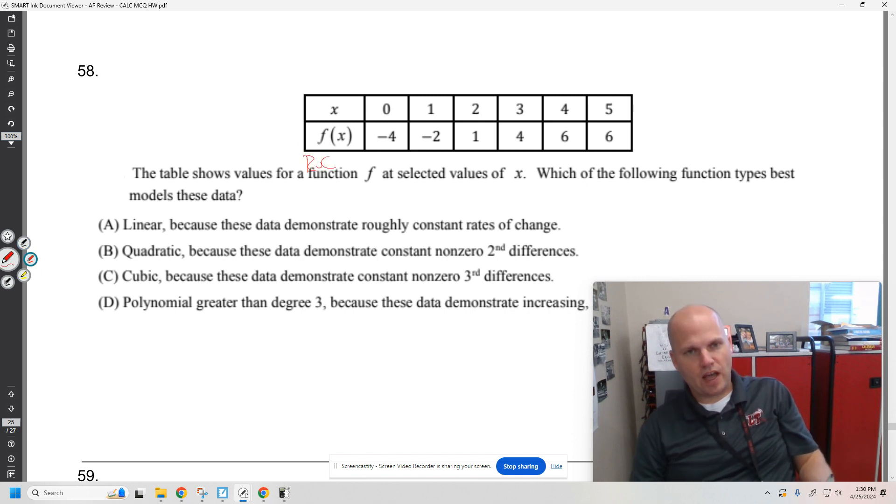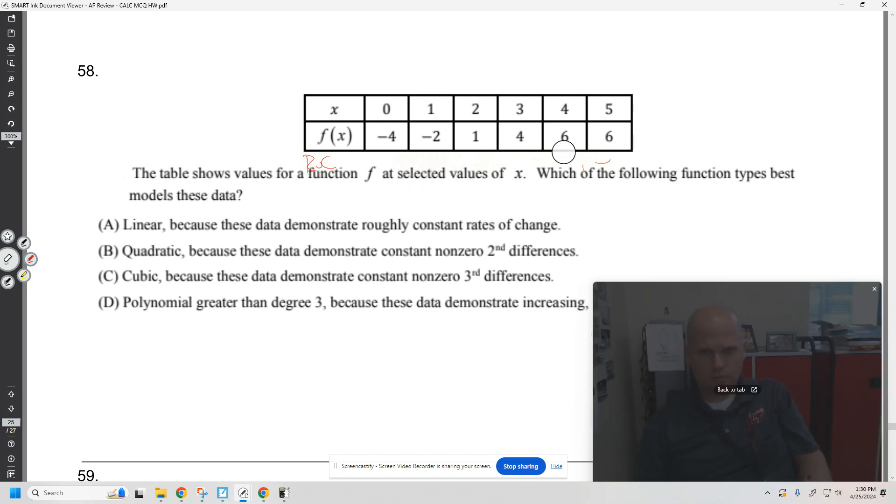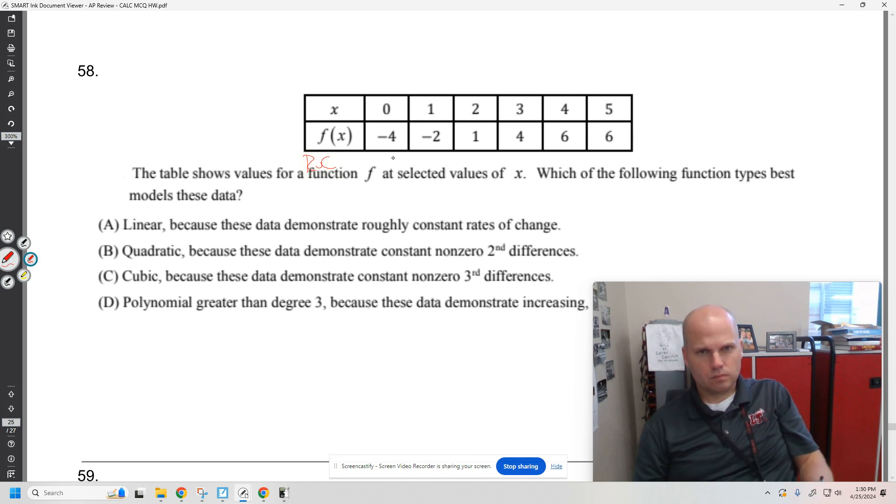So look at the rates of change of f: plus 2, plus 3, plus 3, plus 2, plus 0. The rates of change of the rates of change, and the rates of change are plus 1, plus 0, minus 1, minus 2. The rates of change of the rates of change constant. If this is constant it's linear. If this is constant it's quadratic. If the rates of change were linear, then the rates of change of the rates of change will be constant.